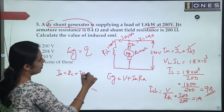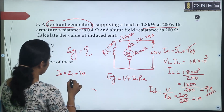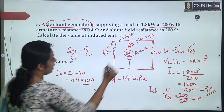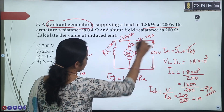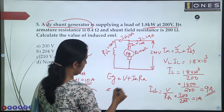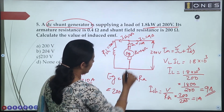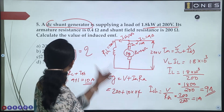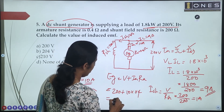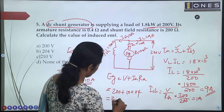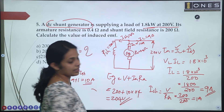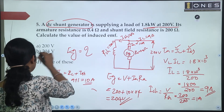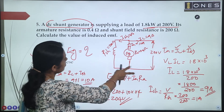With IA = 10A and RA = 0.4 ohms: EG = V + IA × RA = 200 + 10 × 0.4 = 200 + 4 = 204V. That is the induced EMF of the DC shunt generator.